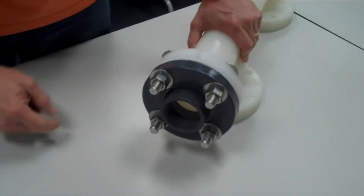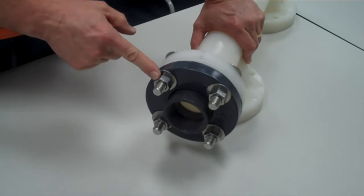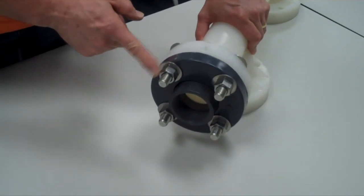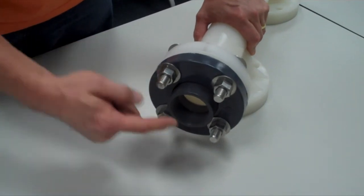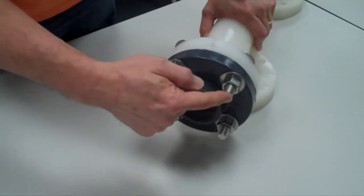Once all the hardware is in place, you'll want to tighten in the torque sequence that's noted on your instructions. In the case of a four bolt pattern, the torque is one, two, three, and four.